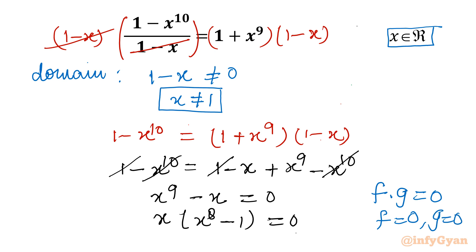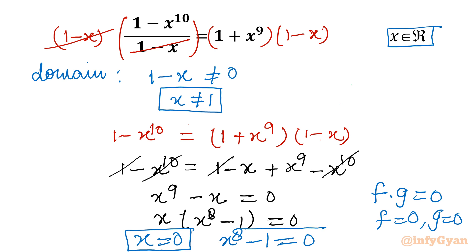So x = 0 is the very first real solution. The remaining solutions come from x^8 - 1 = 0, which will give up to 8 more solutions, so overall 9 solutions. x = 0 is clear; now we need to find the remaining 8 solutions.